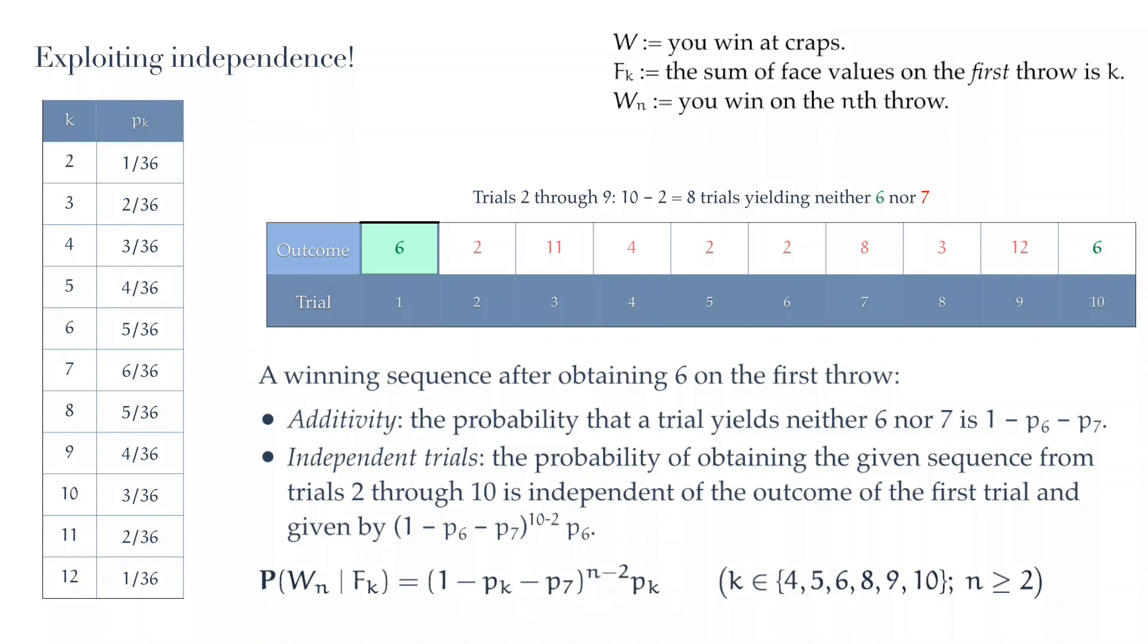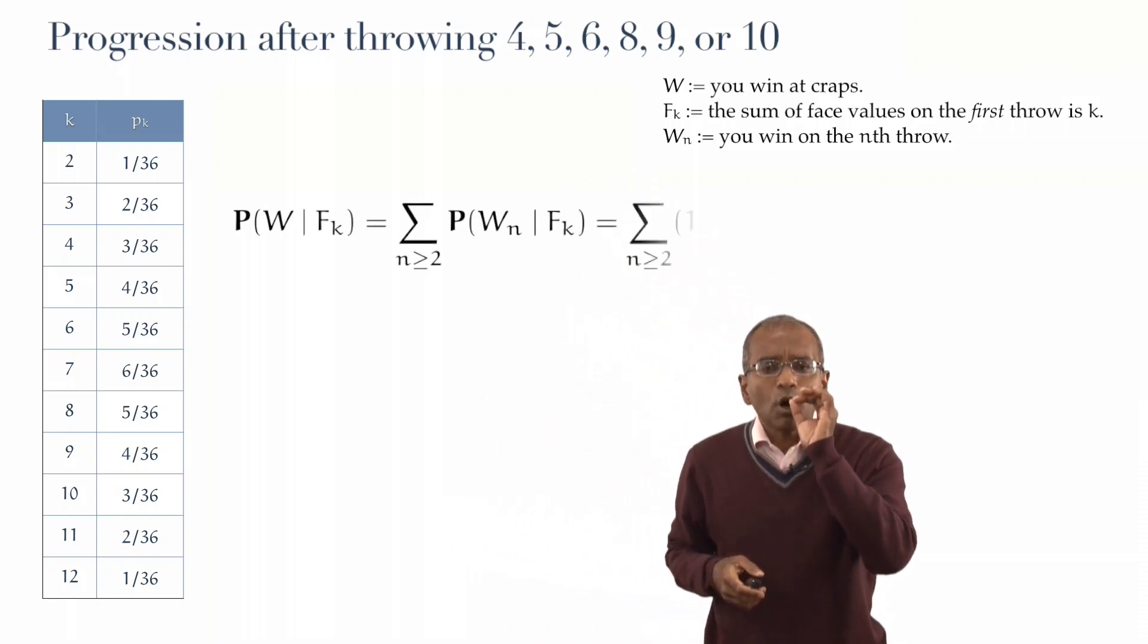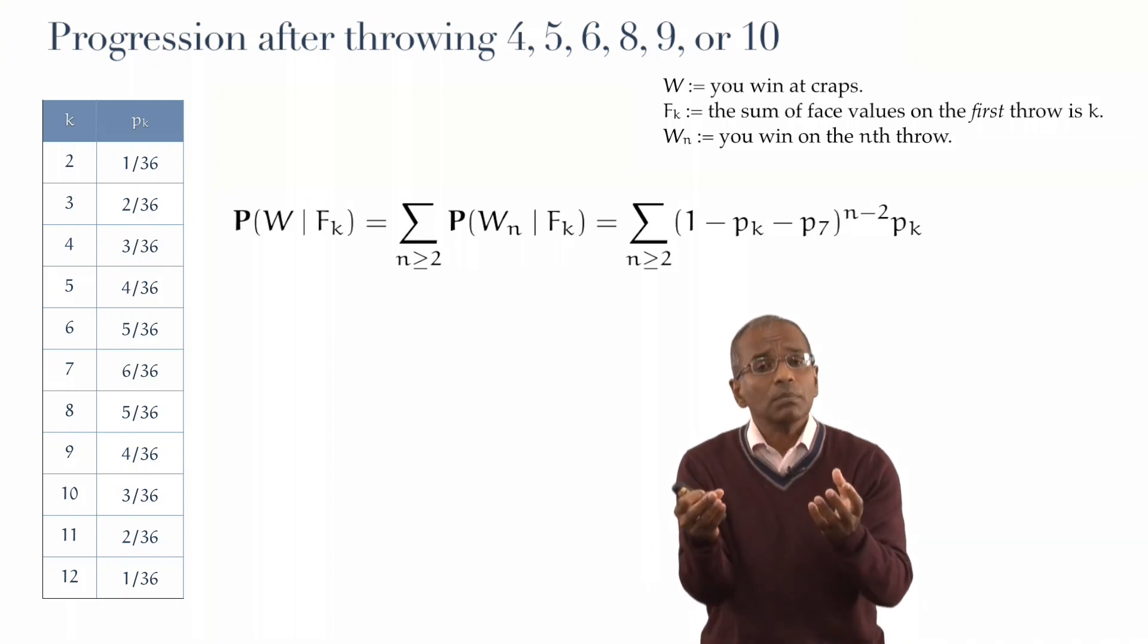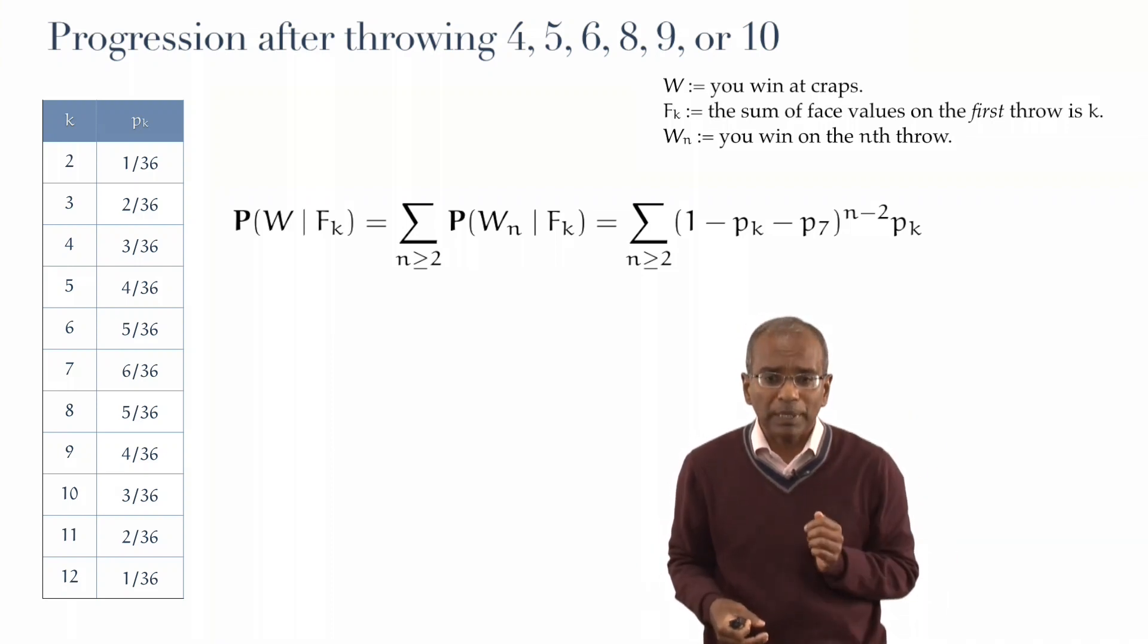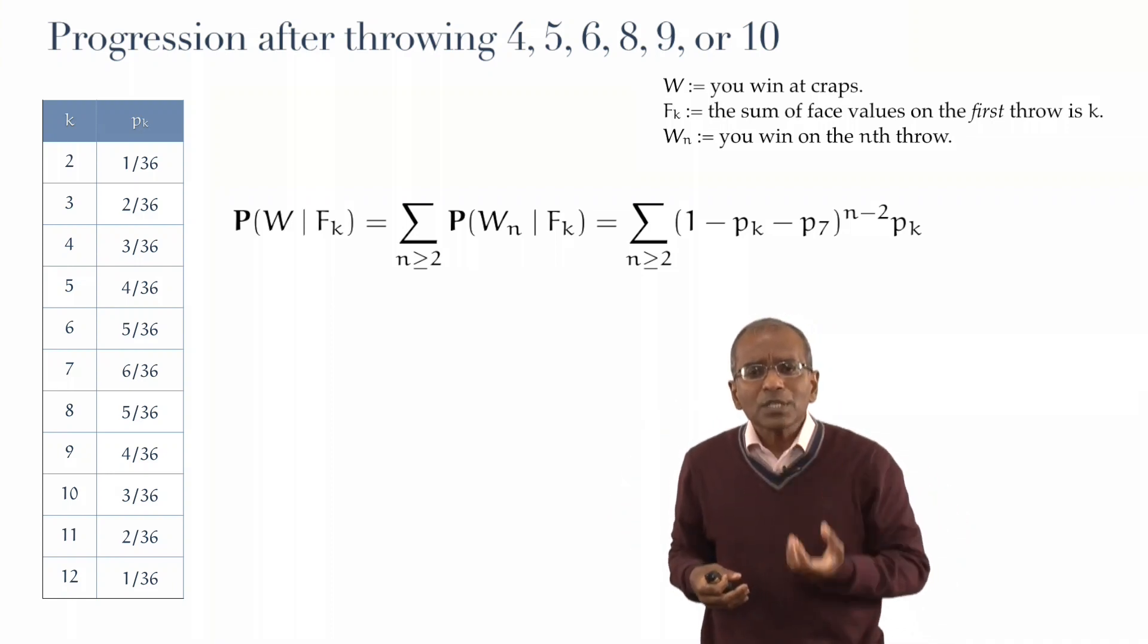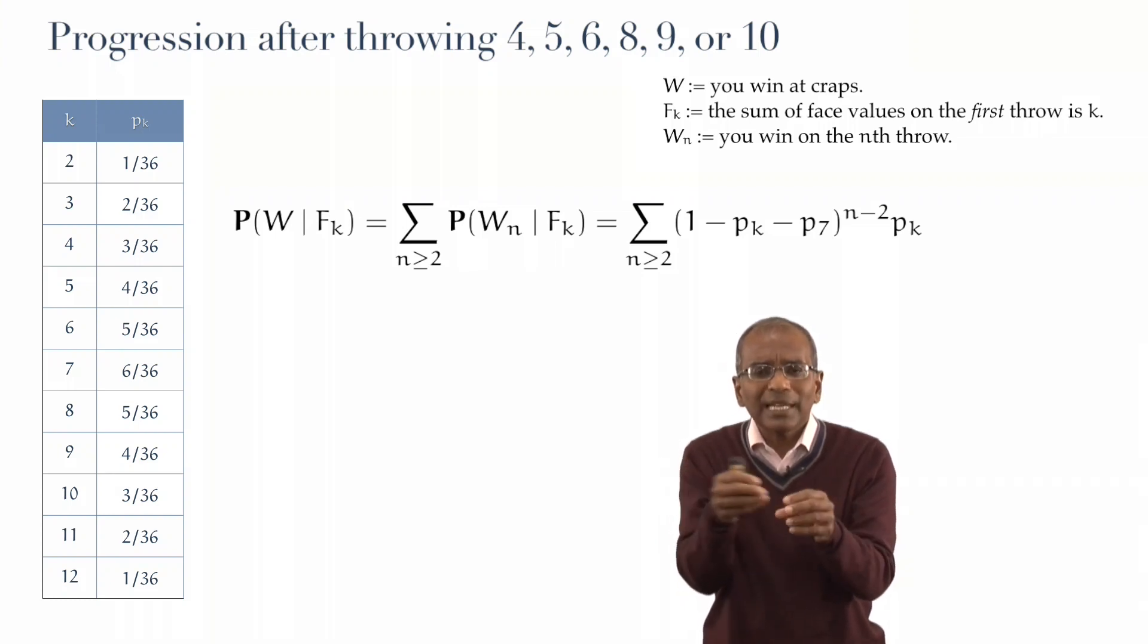And now we've got all the conditional probabilities at hand. All's over, bother shouting. Yes, there's a little bit of technical assembly left over, but it's not very much. Let's put it all together. So, let's begin by writing down the progression. The probability of winning, given that one of the designated numbers, 4, 5, 6, 8, 9, or 10, happened in the first trial, is given by a sum from the second trial onwards of conditional probabilities, and that we've seen is given by this form which is evocative. Powers of 1 minus Pk minus P7 multiplied by a Pk. Now, the Pk at the end is of little matter. It does not depend upon n. It can come out of the sum. What about the things in the middle?